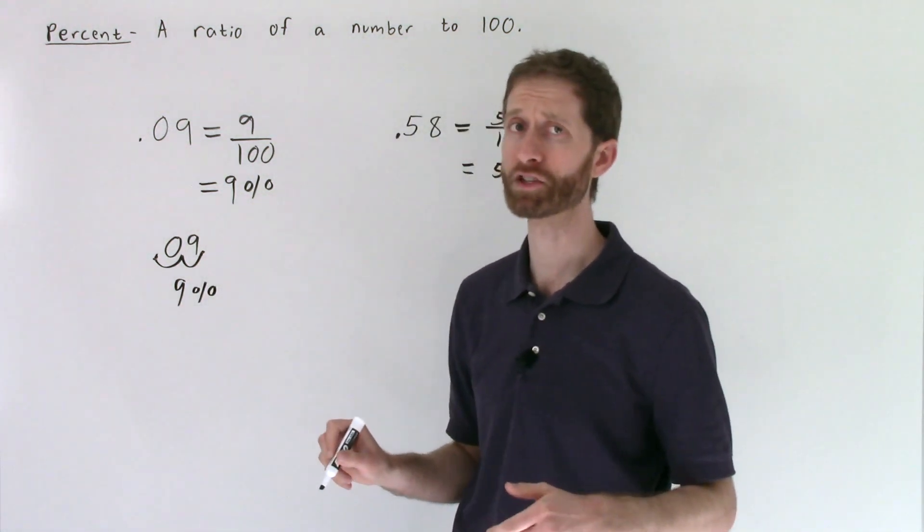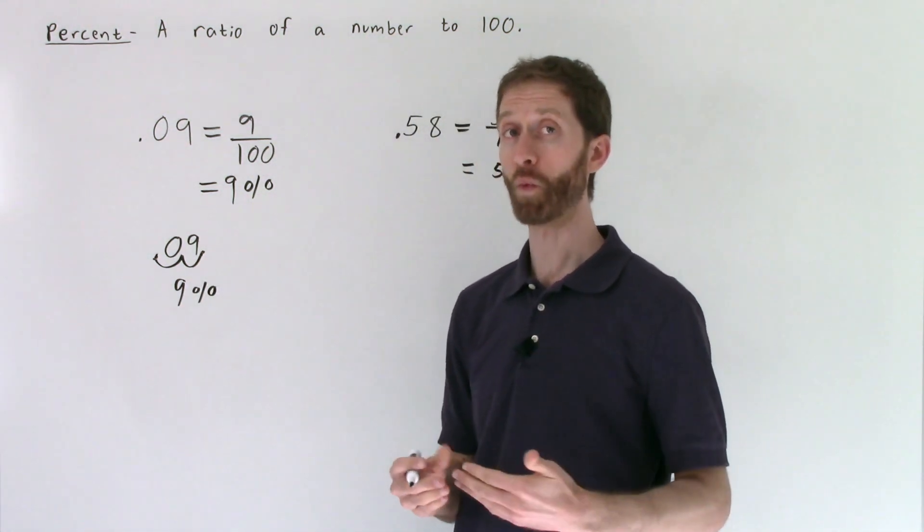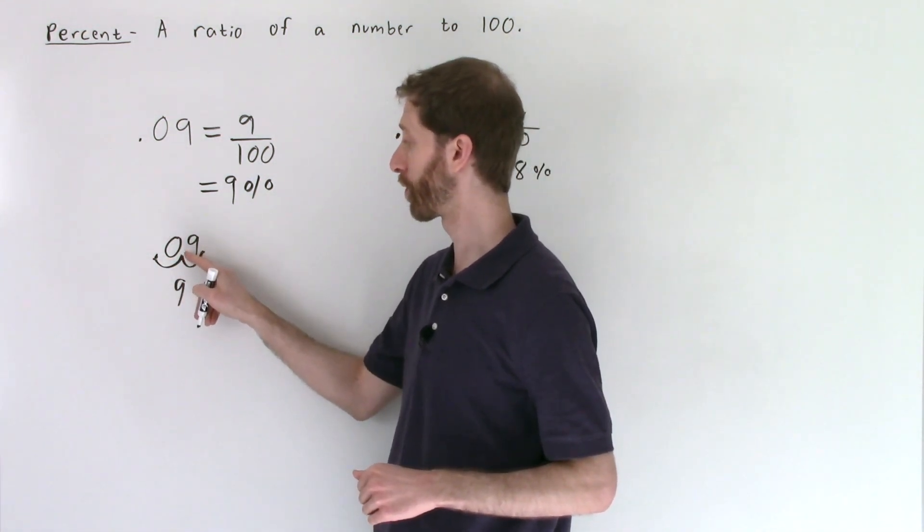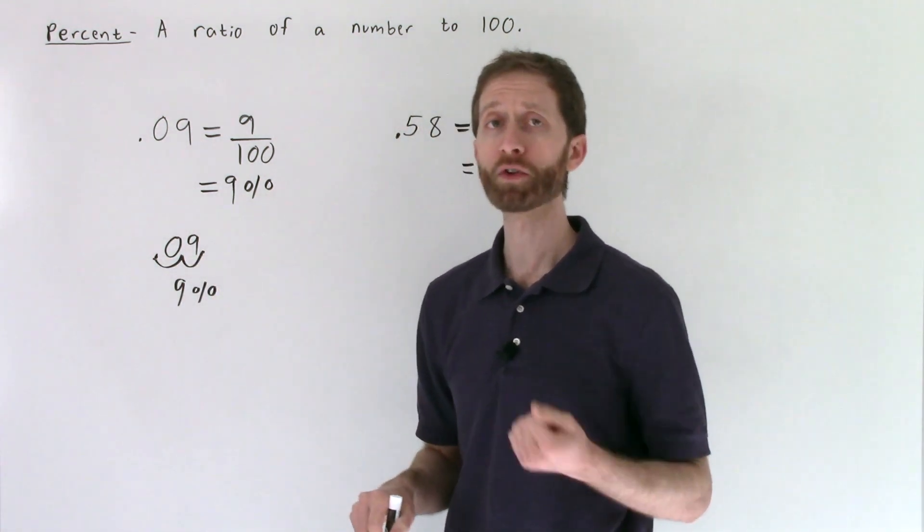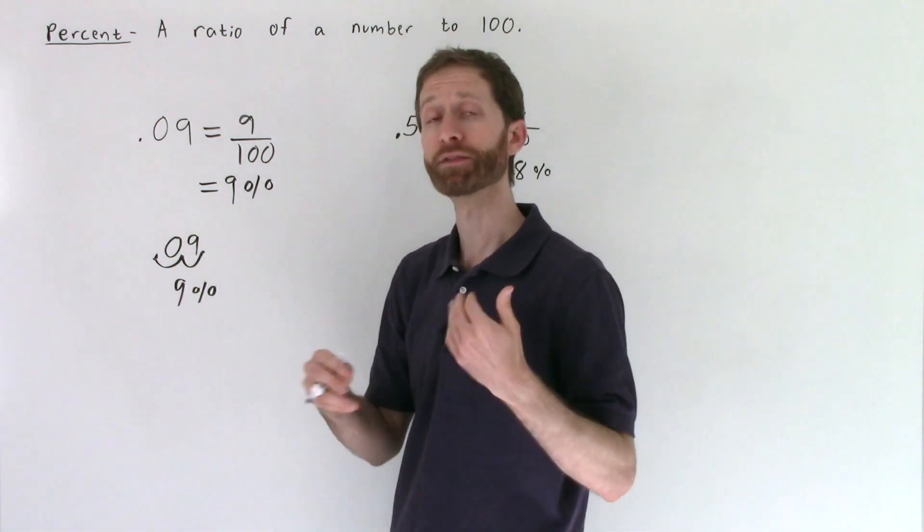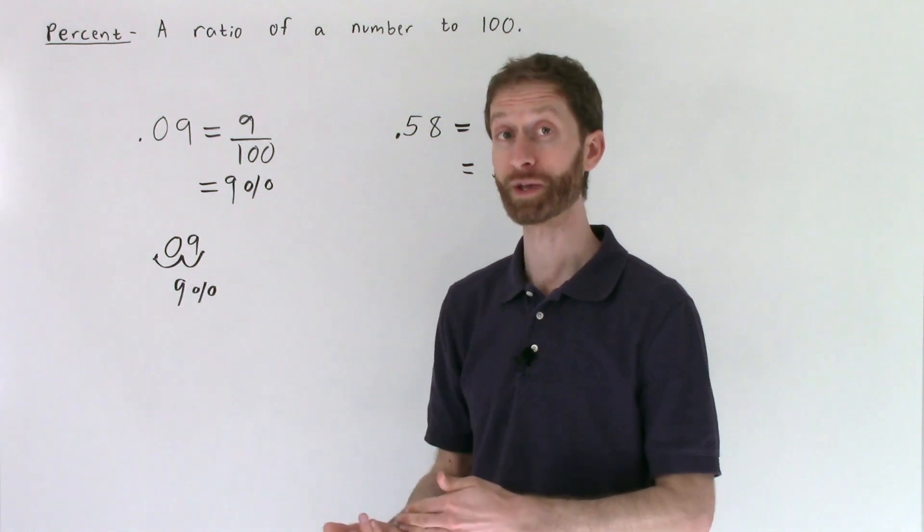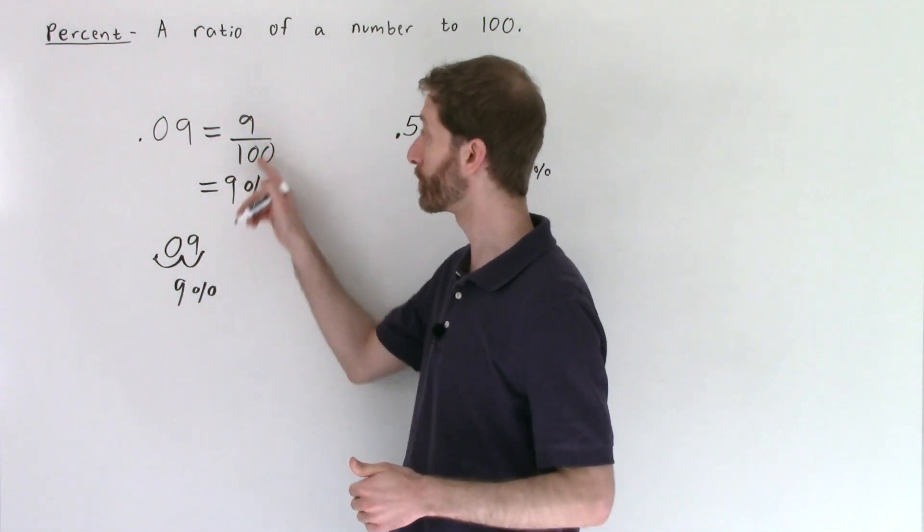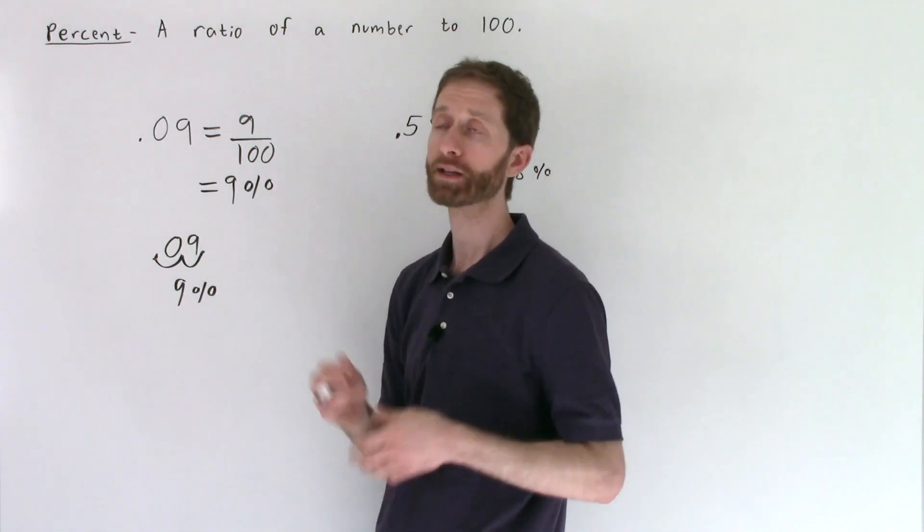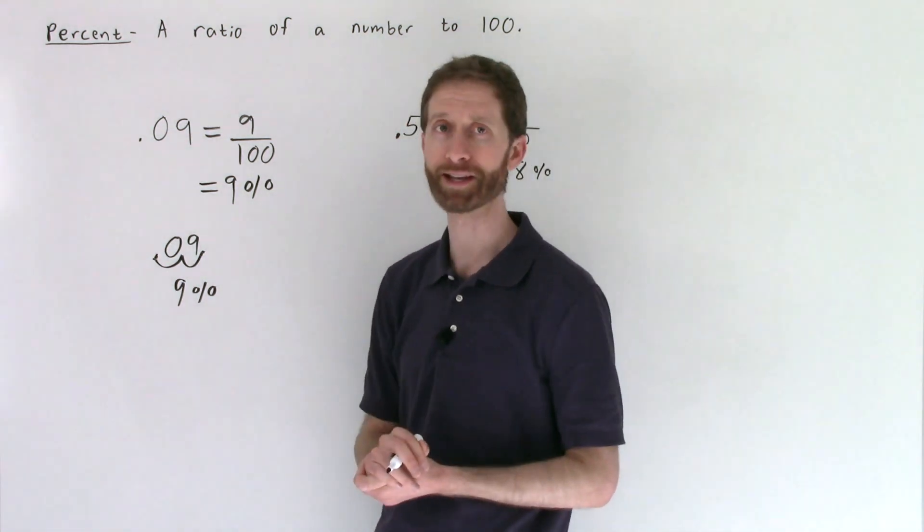Now I'm not a fan of this trick unless you understand why it works. What we're doing is by moving the decimal place over one, two places, we're multiplying by ten and then multiplying by ten again to find out just how many hundredths we have. So you're really just doing nine hundredths and saying, well, that's nine per one hundred or nine percent. That's why that trick works the way it does.